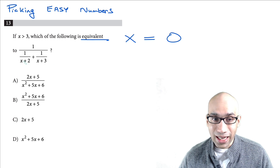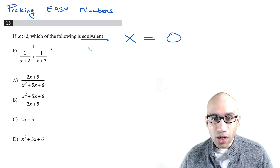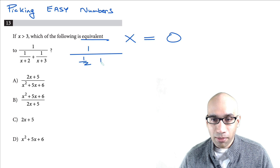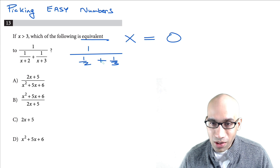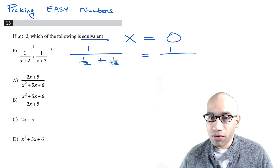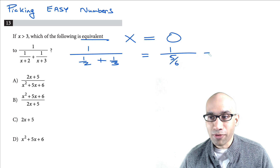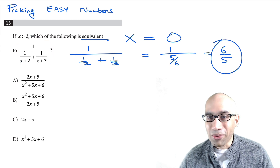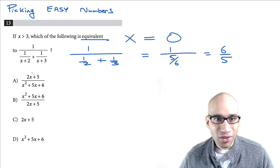When you set x equal to 0, the x terms cancel out and you're left with 1 over (1/2 plus 1/3). This simplifies to 1 over (3/6 plus 2/6), which gives you 1 over 5/6, or 6 over 5.